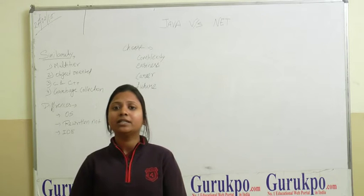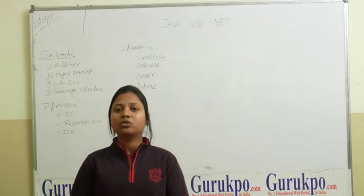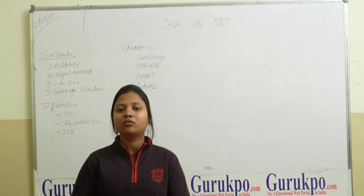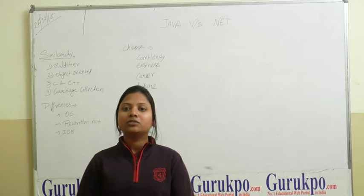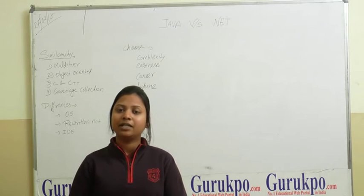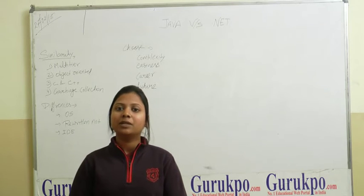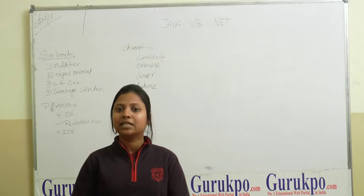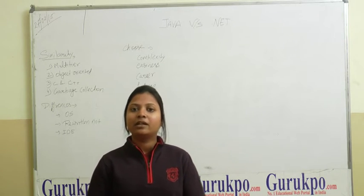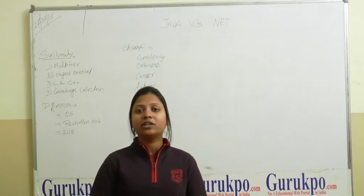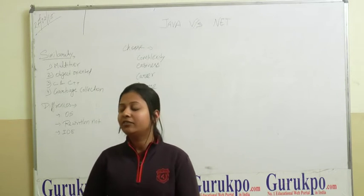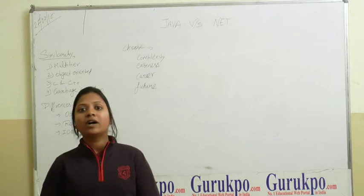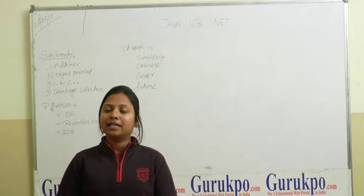Now let's talk about the differences between these two languages. The main difference is that .NET is basically made for Microsoft-based operating systems, but Java is made for all types of operating systems. As seen in the market, mobile applications and gadget applications are made in Java rather than .NET, because Java runs on a virtual machine that provides the facility to run on any platform and any type of operating system. This is a major advantage for Java over .NET. Another difference is that both Java and .NET allow code to be easily updated and rewritten.